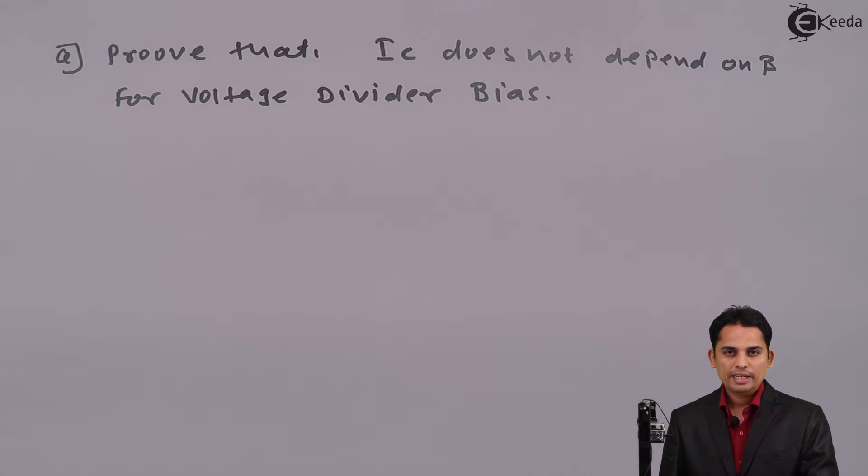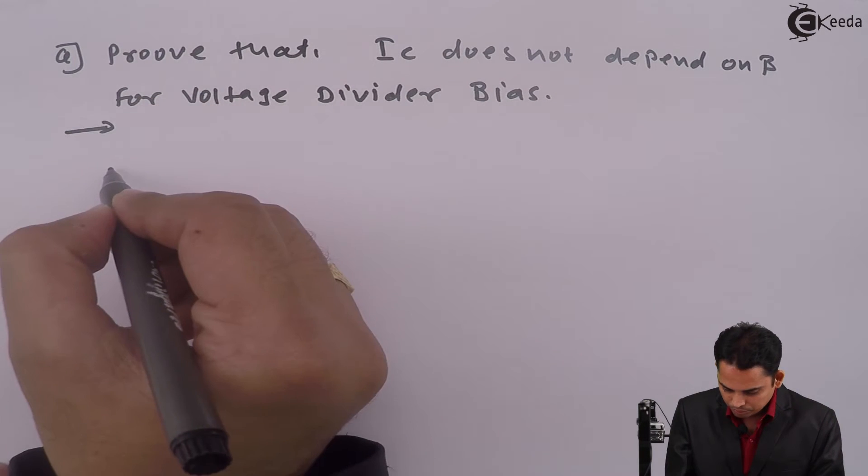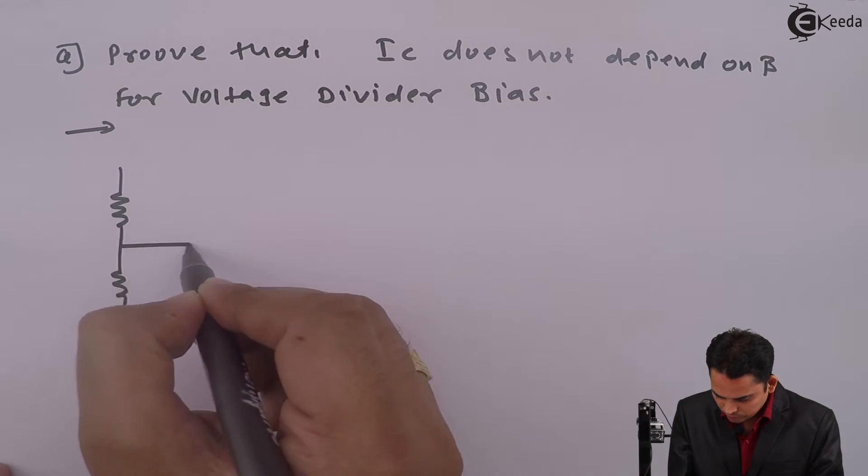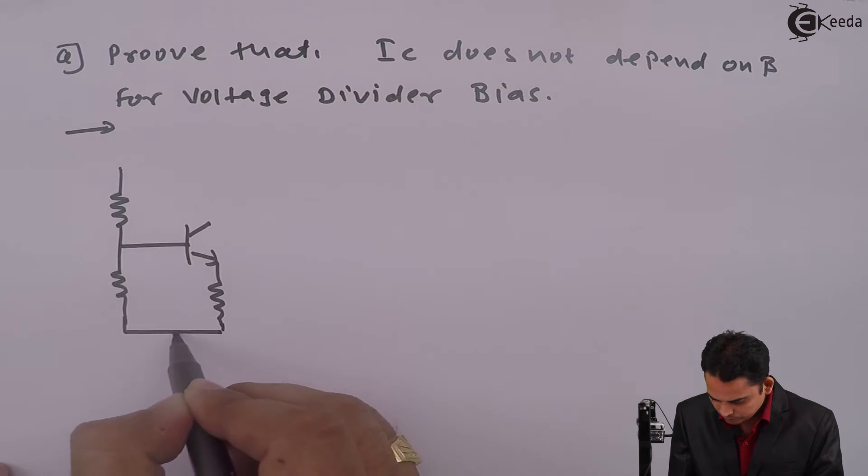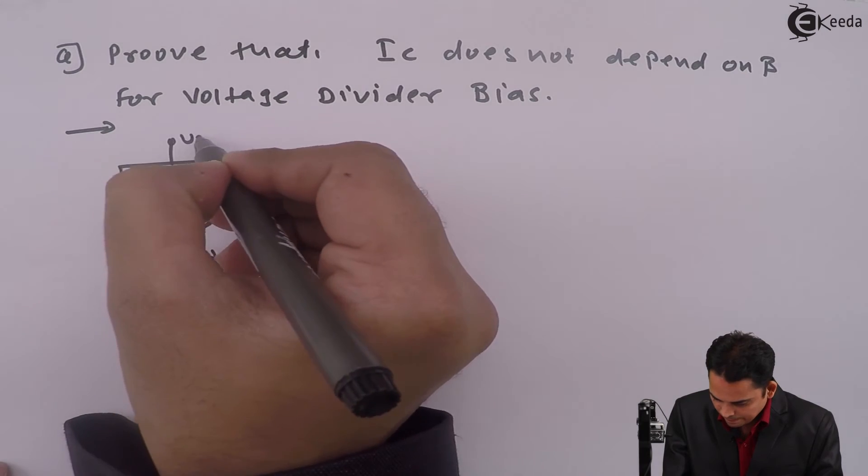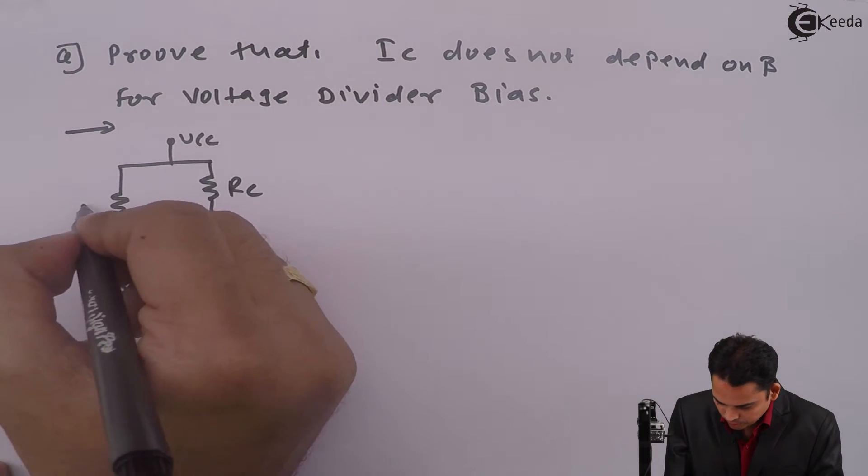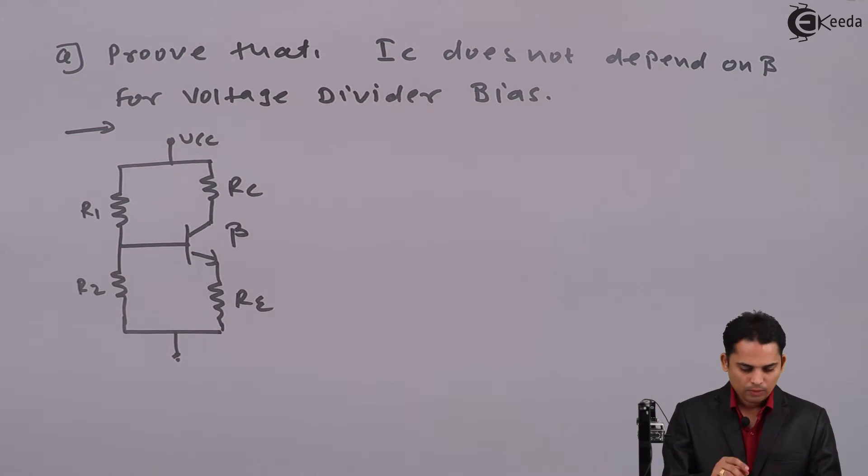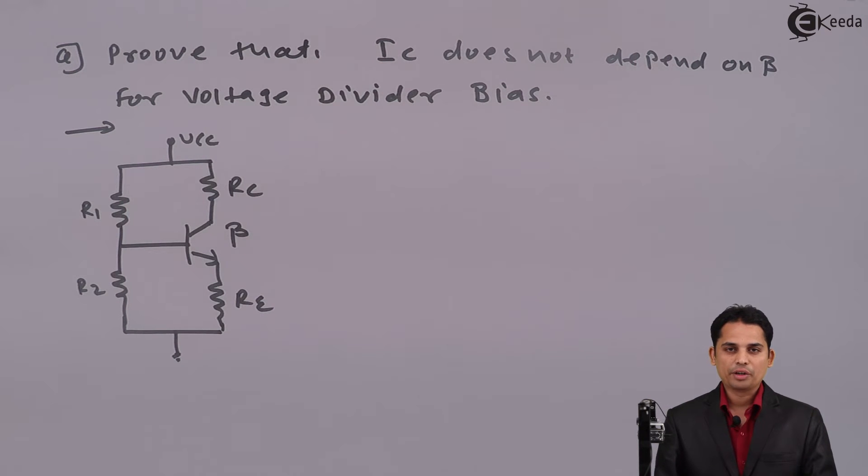So first of all, we will draw the circuit diagram of voltage divider bias. This is voltage divider bias circuit.